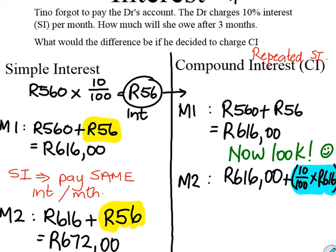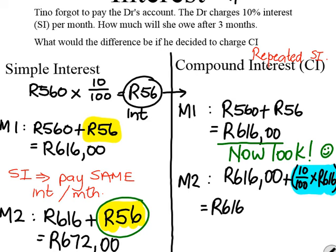It means I am finding interest on the amount from the previous month, and I am finding a percentage of that. So I am finding a percentage of a bigger amount, so it is going to be more than my 56 Rand from last month. So I have got 616 Rand, plus 10% of that would be 61 Rand 60.